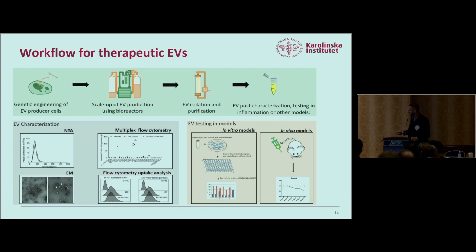Characterization tools include nanotracking analysis to determine number and size of EVs, electron microscopy to confirm vesicle presence, Western blotting, multiplexed flow cytometry to look at multiple markers simultaneously, and additional methods for comprehensive characterization.